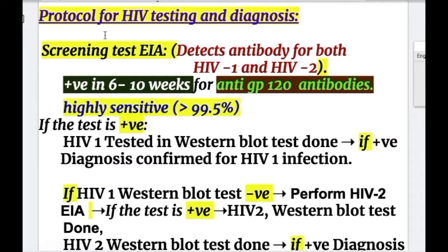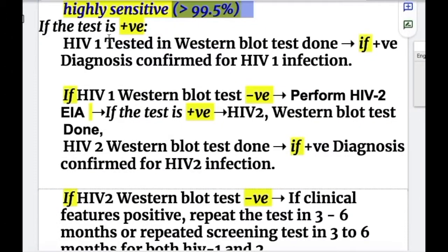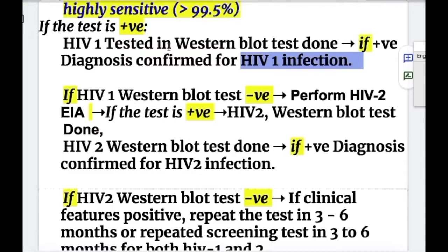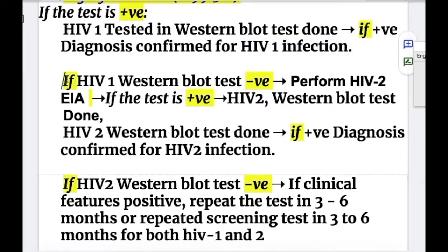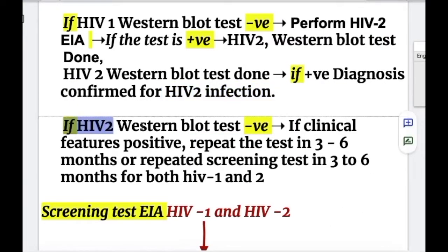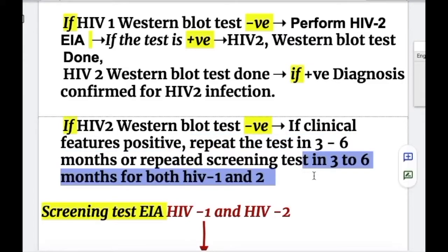The protocol for HIV testing and diagnosis begins with the EIA screening test for both HIV-1 and HIV-2, which is highly sensitive in more than 99.5% of cases. If positive, the HIV-1 Western blot test is performed; if positive, HIV-1 infection is confirmed. If HIV-1 Western blot is negative, HIV-2 EIA screening is done, followed by HIV-2 Western blot — if positive, HIV-2 infection is confirmed. If HIV-2 Western blot is also negative but clinical features are present, repeat the screening test in 3 to 6 months for both HIV-1 and HIV-2.